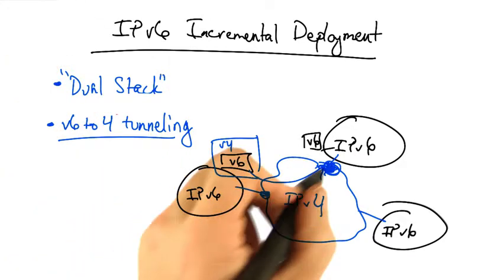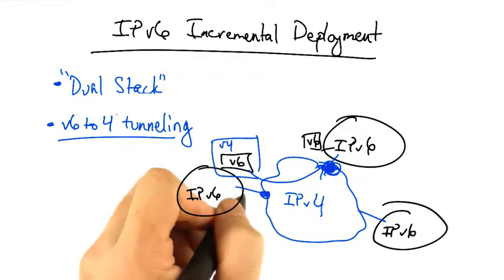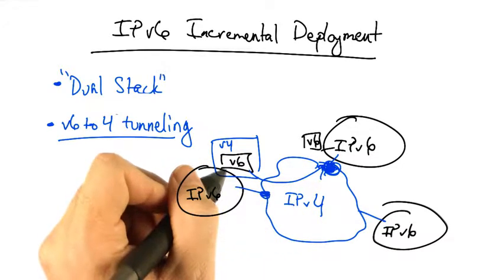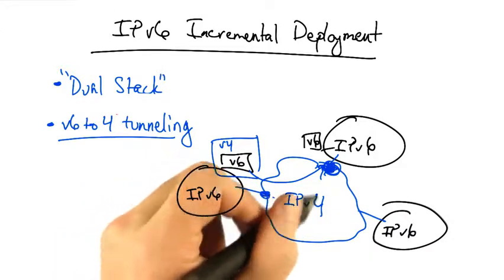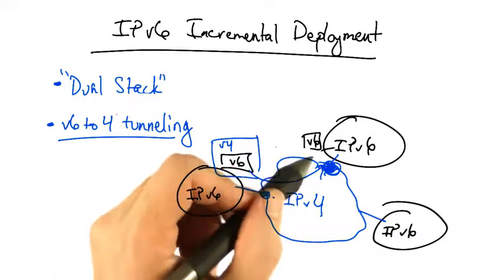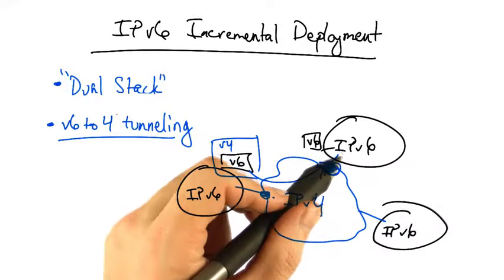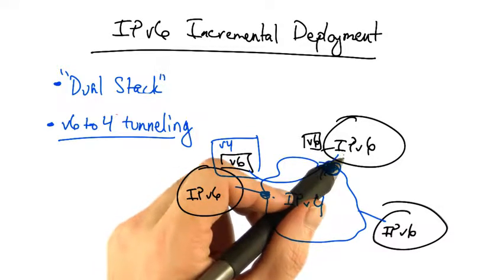This of course requires the gateways at the boundaries between the v4 and v6 networks to perform encapsulation of the packet as it enters the v4 only part of the network, and decapsulation as the packet enters the v6 island where the destination host resides.